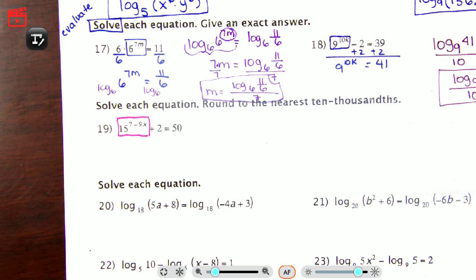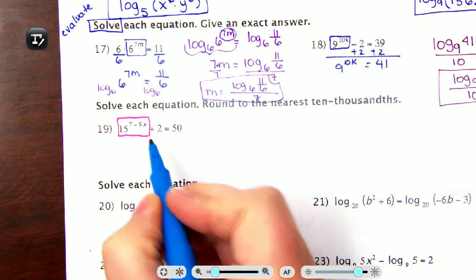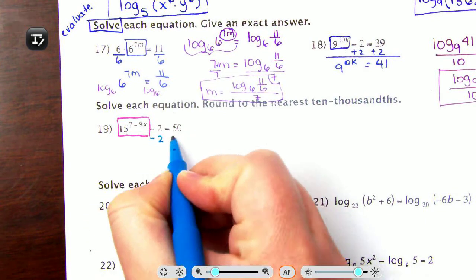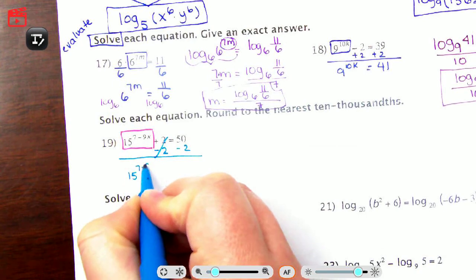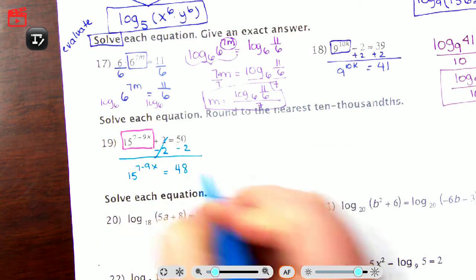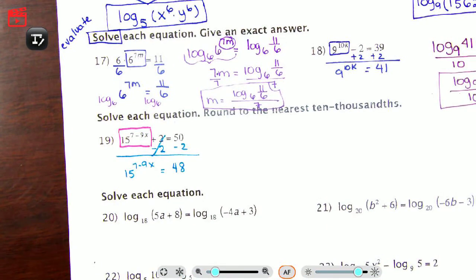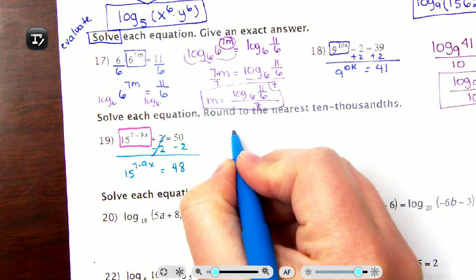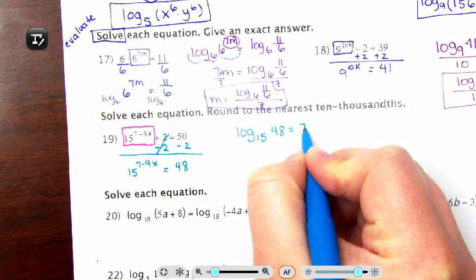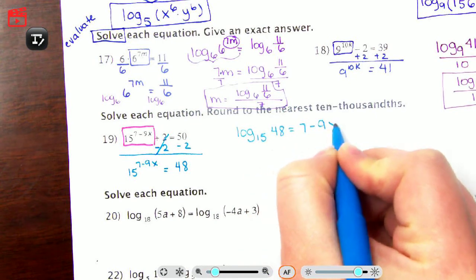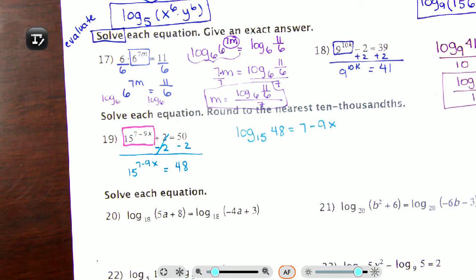Put it in a bubble so you understand you cannot break those two apart. Anything outside the bubble gets taken care of first — for example, I have plus two outside, so I take care of that. Now I have 15 to the 7 minus 9x equals 48. Then I use the definition of a logarithm: log base 15 of 48 equals 7 minus 9x.